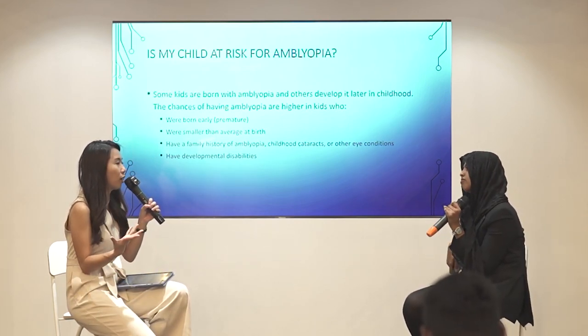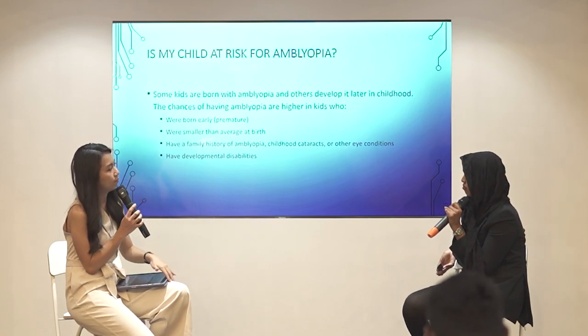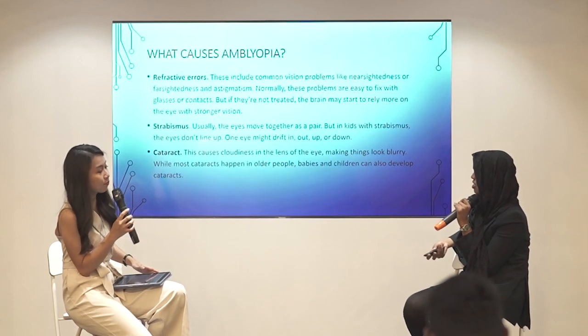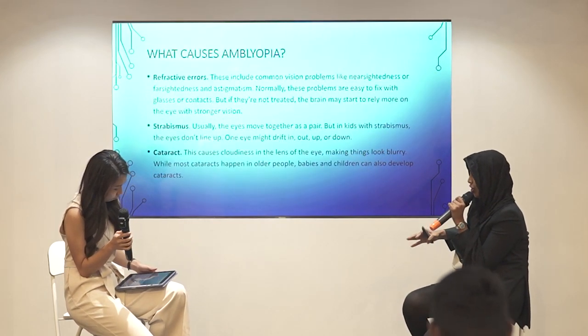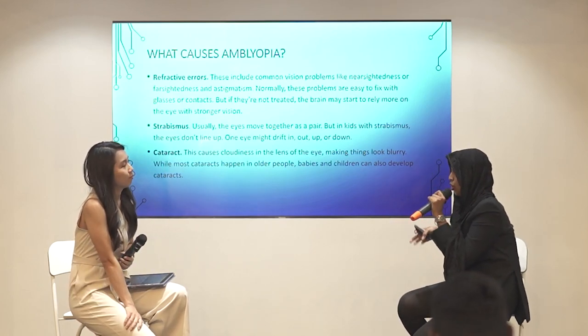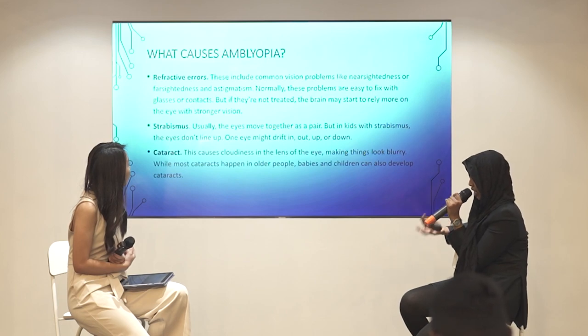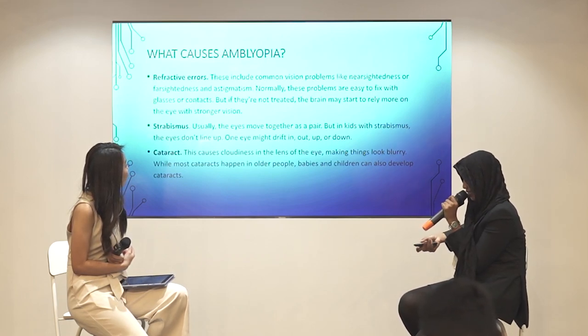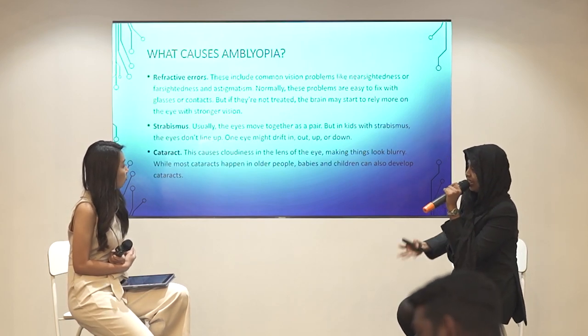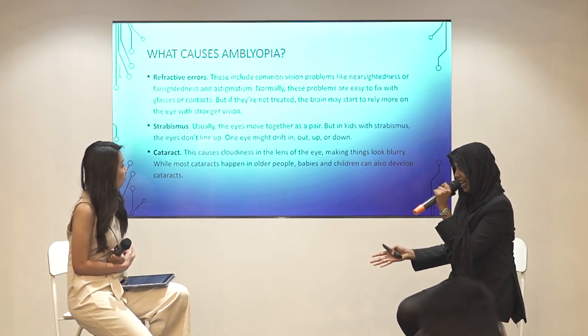What causes amblyopia? Basically, if there is an uncorrected refractive error — like myopia, hyperopia, or astigmatism that is not corrected — it can cause amblyopia. Strabismus, where the eyes are squinting out or in and are not aligned, can also cause it, as well as cataract. Whenever information is not received properly by the brain from a particular eye, the brain stops processing it — that is when amblyopia occurs.